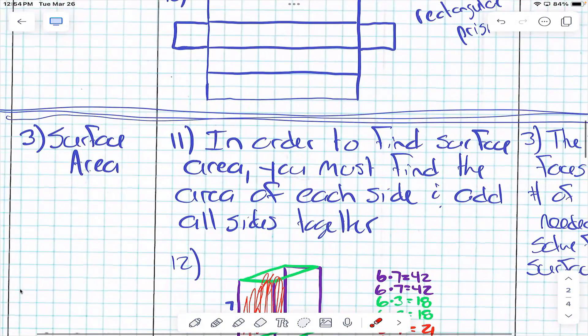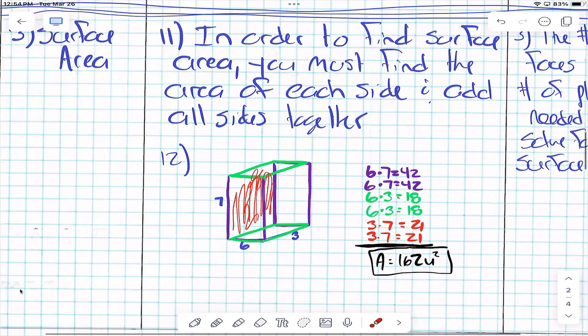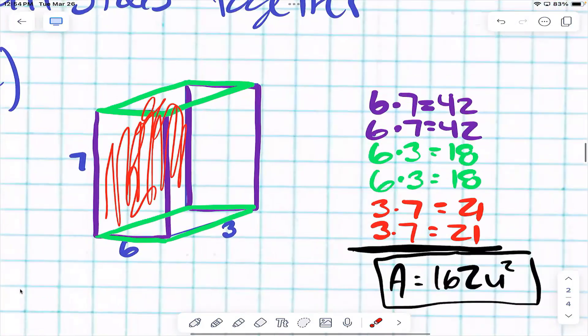All right, guys. In order to find surface area, you must find the area of each side and add all the sides together. Let's look at this shape right here.